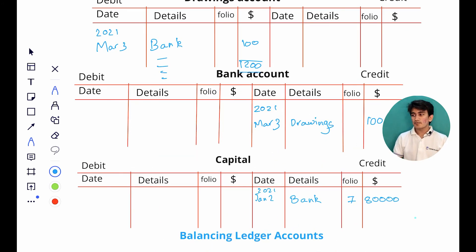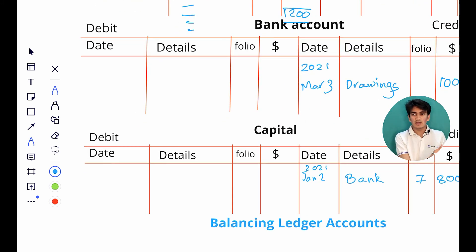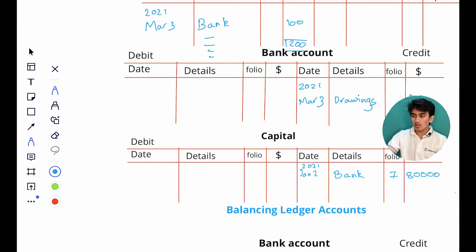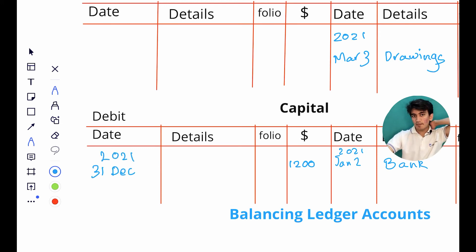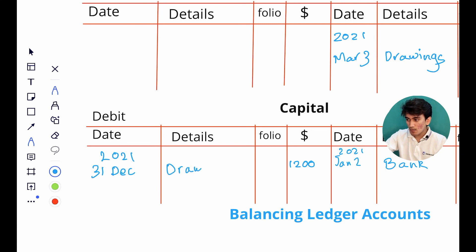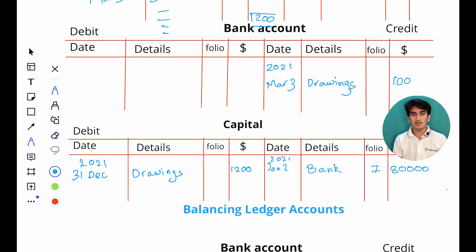At the end of the year, the drawings account will be closed and that twelve hundred dollars worth of drawings will be shifted to the capital account. The capital account will be debited. So I'll go to the capital account and write twelve hundred dollars - this is at the end of the year, so we write 31st December 2021. The capital account will be debited by all the drawings that have taken place throughout the year, so we write the drawings account and the amount of twelve hundred dollars. This is how the capital account is also affected by drawings that take place throughout the year.